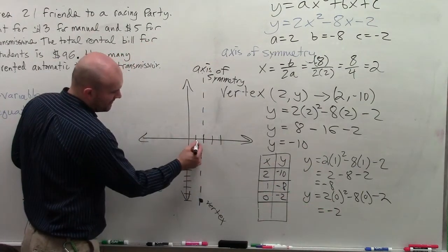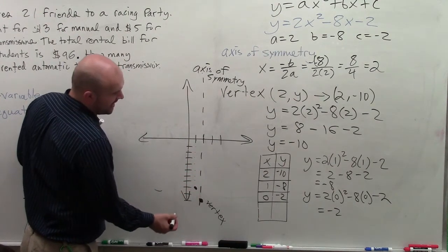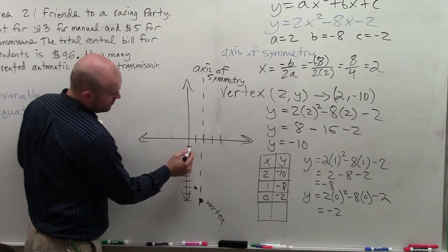So we have 1, negative 8. 1, 2, 3, 4, 5, 6, 7, 8. And we have 0, negative 2. 1, 2.